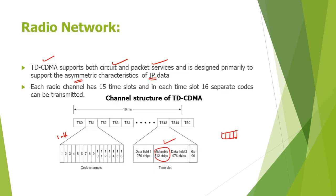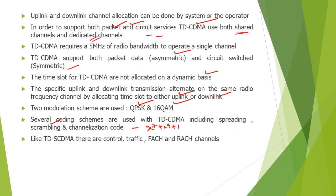The radio network subsystem channel structure consists of time slots 0 to 14 — 15 time slots in total. Each time slot is divided with respect to 10 milliseconds, and each time slot holds 16 code channels. Each time slot consists of: data field one holding 976 chips (the information part with header), data field two holding 976 chips (with data field trailer), an additional guard period (GP) of 96 bits, and mid-amble bits providing information of 512 chips.